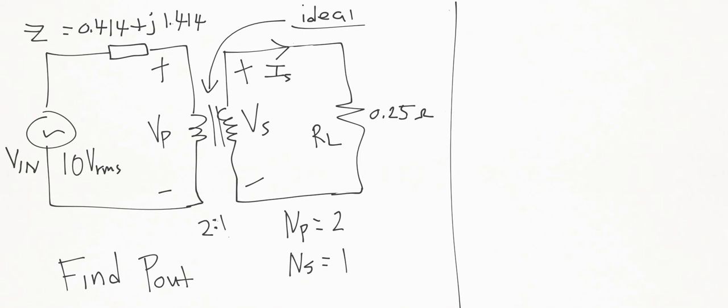Hey guys, welcome back to Engineering Education. For this next video, we have the same Thevenin equivalent circuit from the last video, only instead of finding max power transfer, we added an ideal transformer with a turns ratio of two to one — meaning that for every turn in the secondary you have two turns in the primary winding. The problem asks us to find the power out, or the power dissipated by the resistor RL.